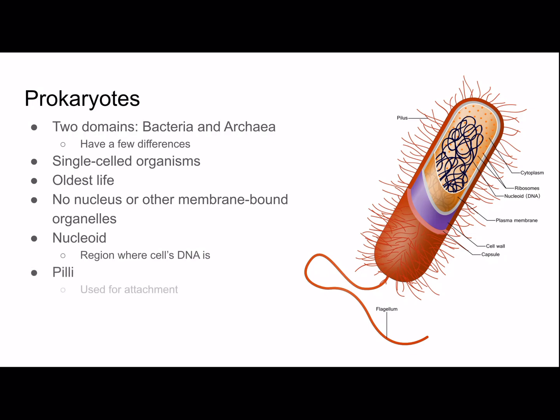Pili are used for attachment and they're only in some prokaryotes — as you can see, they're like the hair-like structures in that picture. Flagella are used for motion and they're also in some animal cells — that's the tail-like structure. On the side, you can see a picture of a prokaryote.